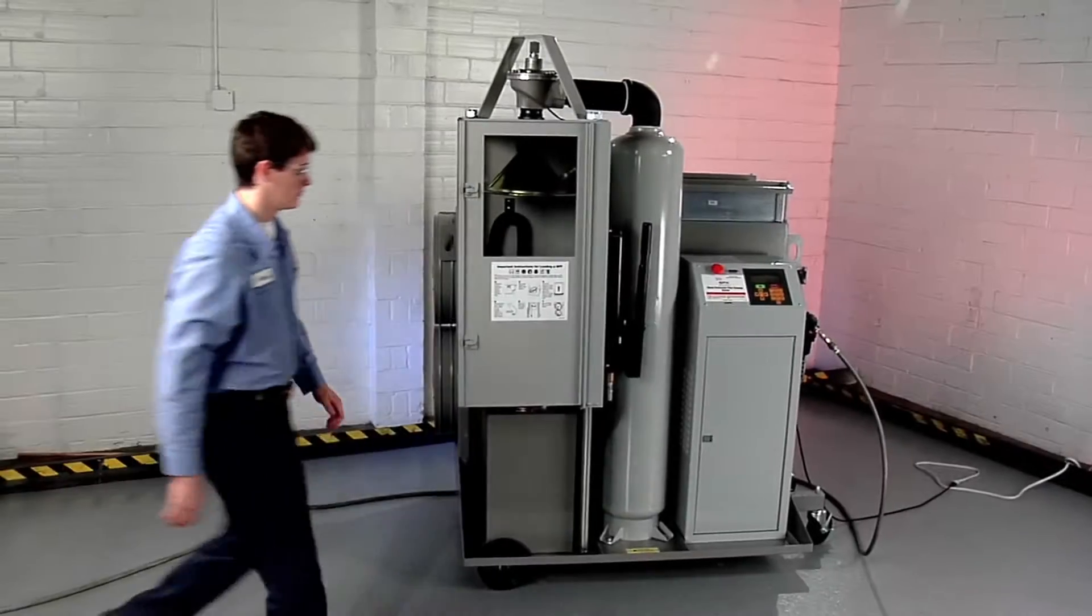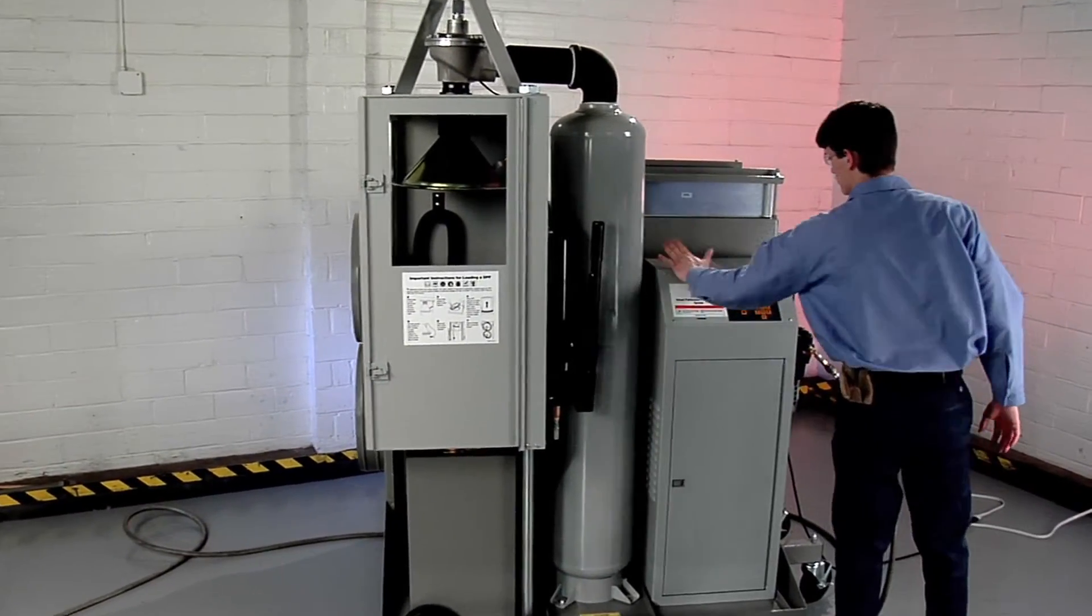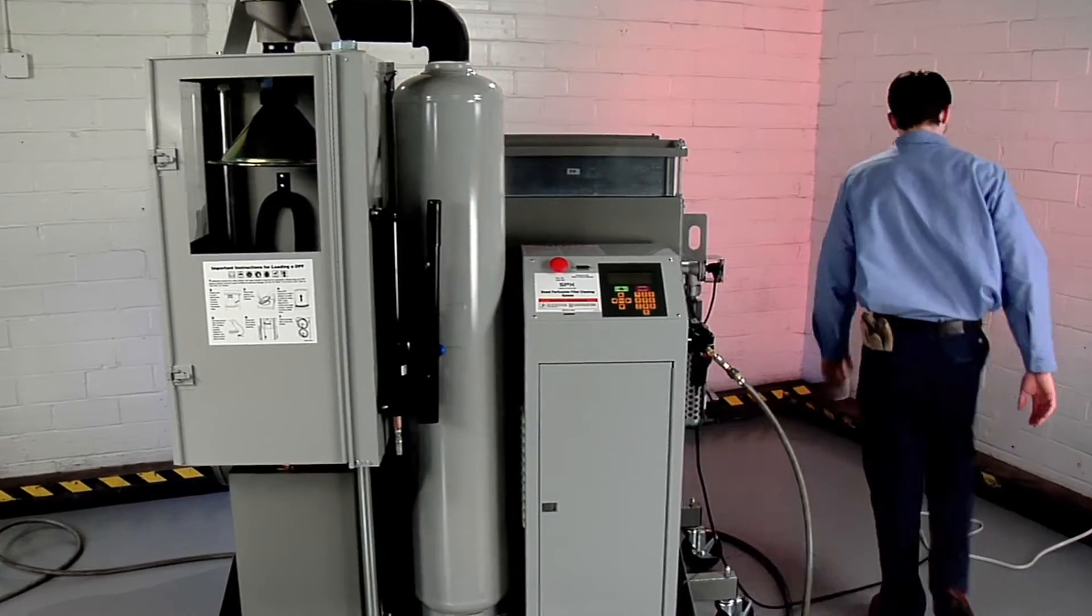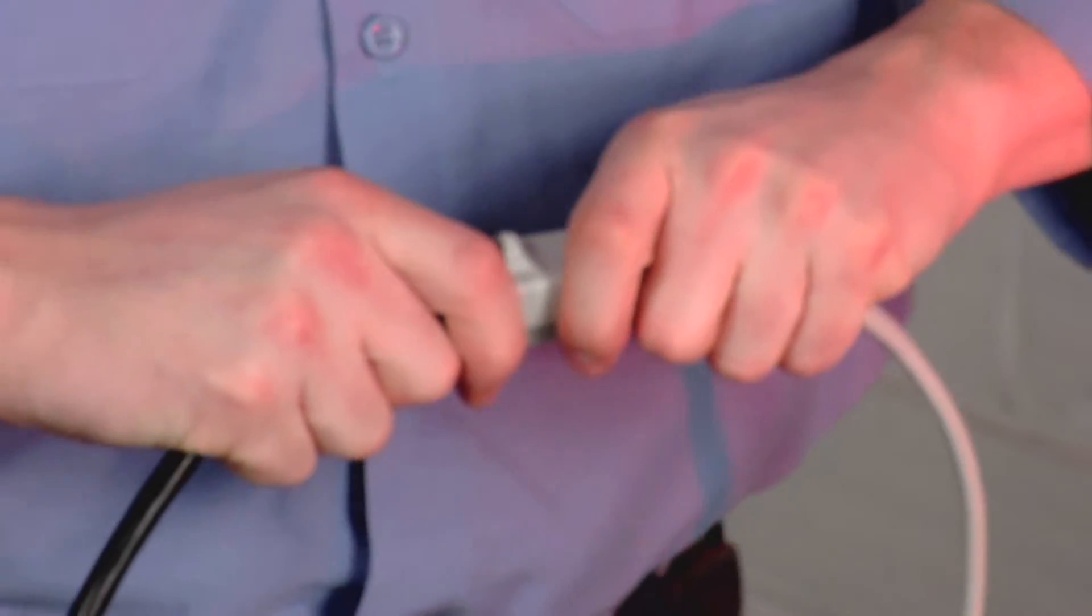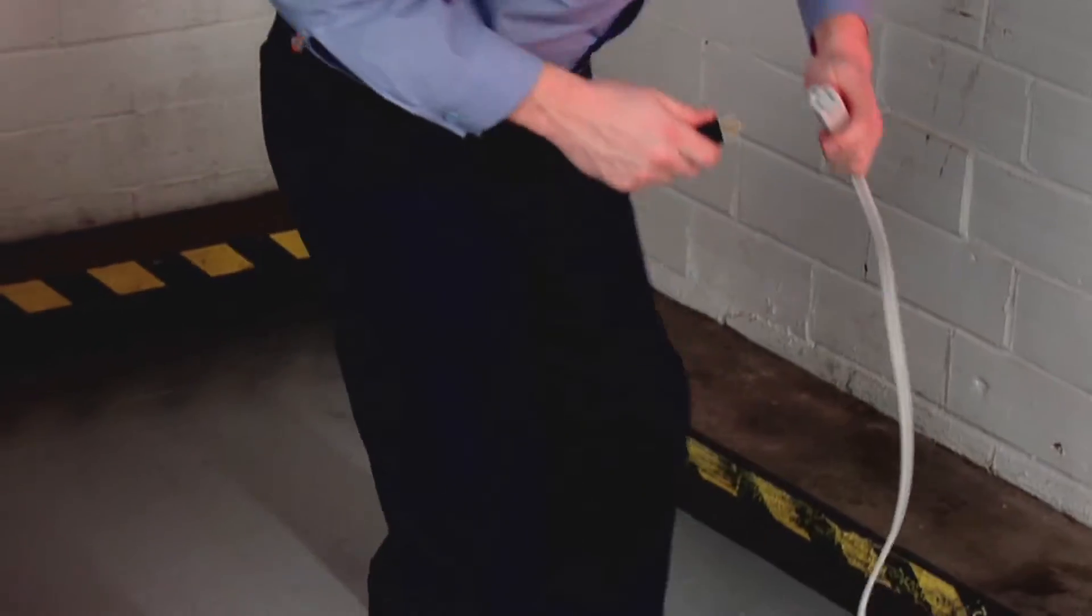Once a month, you must drain the air tank on the DPF cleaner of accumulated water. Turn off the DPF to depressurize it and unplug it from its power source.